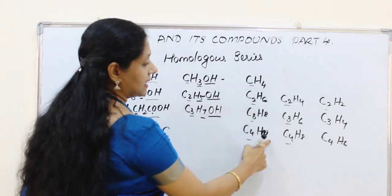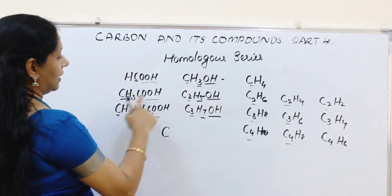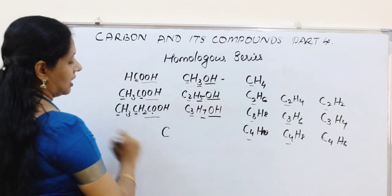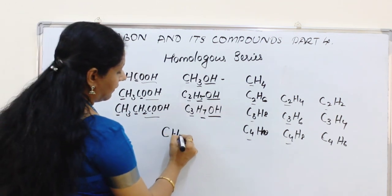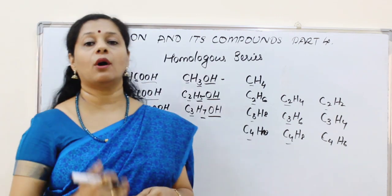Here four, six, eight. In all series, hydrogen increases by two. So we can see that there is a difference of CH2 between adjacent members of a homologous series.